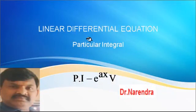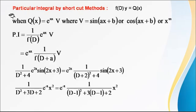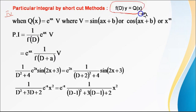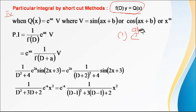Hi friends, in this lecture we will study about linear differential equations — how to find out the general solution of a linear differential equation. This is the fourth shortcut method to find out the PI. f(D)y = Q(x) is the general form. In the first method we studied e^(ax); in the second method either sin or cos; and the third method x^m.